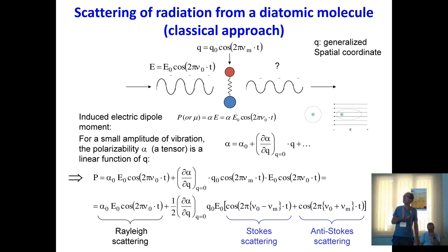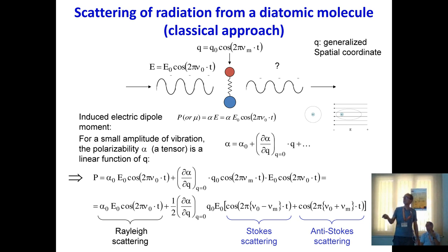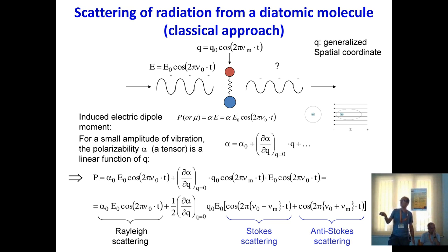Expanding the polarizability α as a function of normal coordinates — keeping the linear term — and substituting into P = αE, you get three terms with three different frequencies. The first has frequency ν₀: that is Rayleigh (elastic) scattering. The other two have frequencies ν₀ − νₘ and ν₀ + νₘ: these are the Stokes and anti-Stokes Raman scattering, corresponding to phonon creation and phonon annihilation respectively.